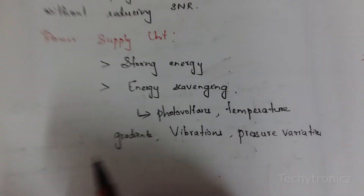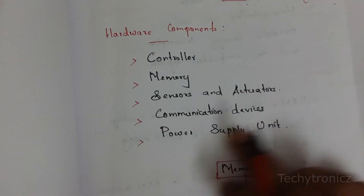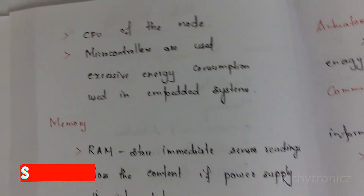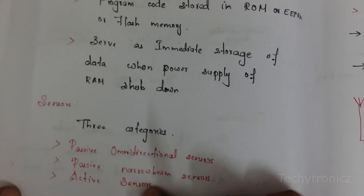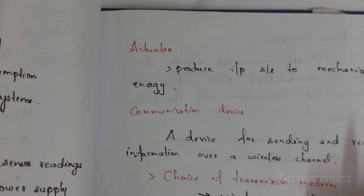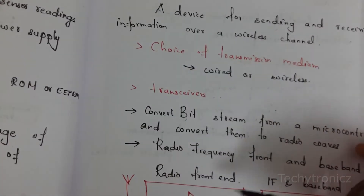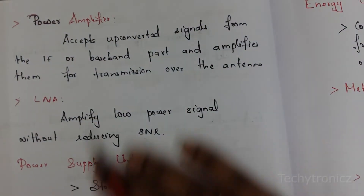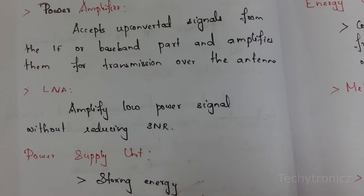These are the components of node architecture: controller (uses microcontroller), memory (RAM, ROM, flash memory), sensors (three types: passive omnidirectional, passive narrow beam, active sensors) and actuators, communication devices (wired or wireless transmission medium, transceivers with radio frequency front end, IF and baseband processing, power amplifier, low noise amplifier), and power supply unit (storing energy via batteries, and energy scavenging).